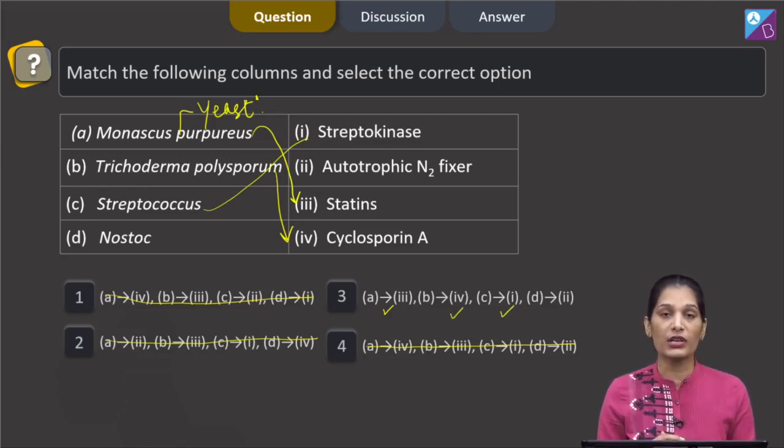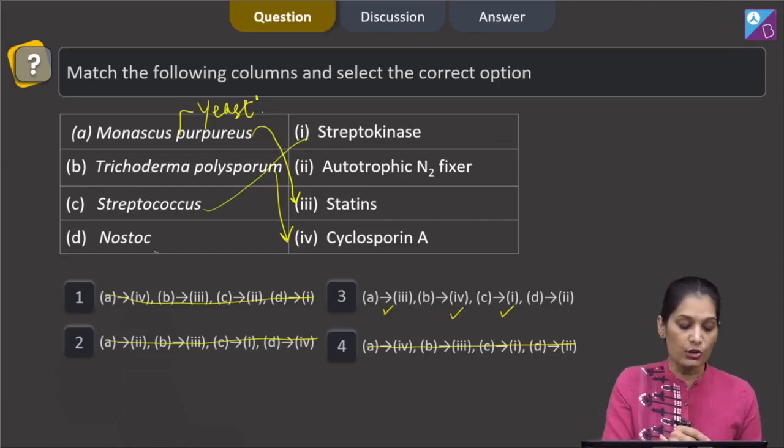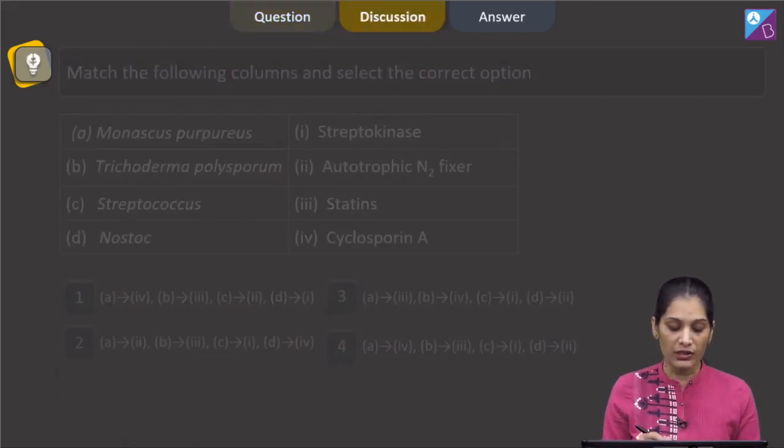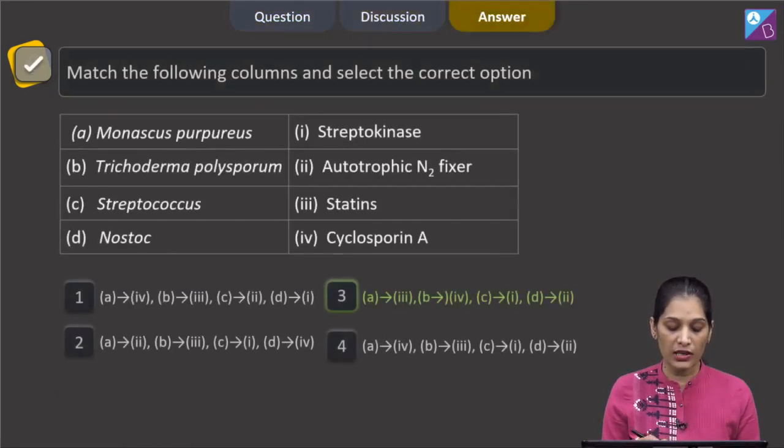And now D, Nostoc. Nostoc is a blue green alga. It is autotrophic nitrogen fixer. So D matches with second. So the correct option for the given question is option number three.